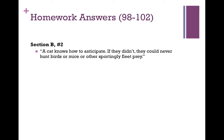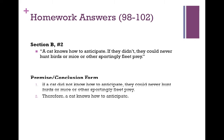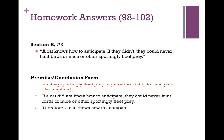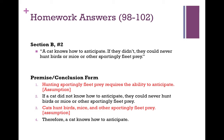Now we come to section B. In this section, you are asked not only to put the argument into premise-conclusion form, but also to identify any implicit premise and then to diagram the argument. The argument reads: a cat knows how to anticipate. If they didn't, they could never hunt birds or mice or other sportingly fleet prey. We can put this in premise-conclusion form very simply. The next question is: what assumption or assumptions is this argument making? One clear assumption is that hunting sportingly fleet prey requires the ability to anticipate. There's another assumption — that cats hunt birds, mice, and other sportingly fleet prey.